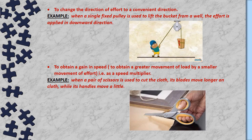Third, a machine can change the direction of effort to a convenient direction. For example, when a single fixed pulley is used to lift a bucket from a well, the effort is applied in the downward direction. Without the pulley, in order to pull the bucket from the well, the person would have to apply force in the upward direction, which is very difficult because the weight of the bucket pulls the rope downward. So applying force downward is easier than upward.